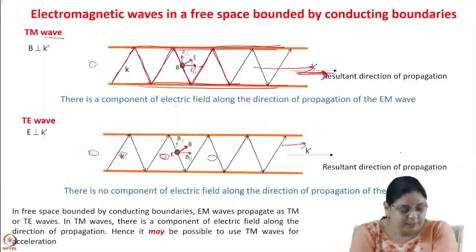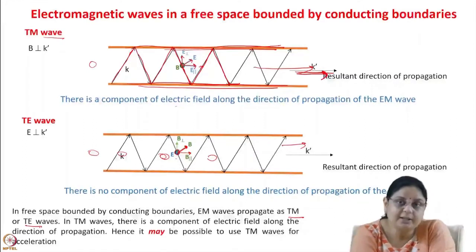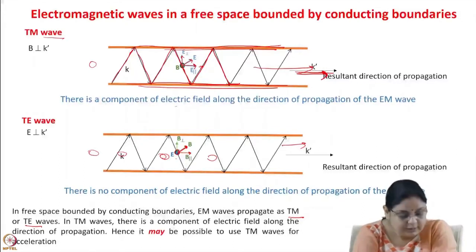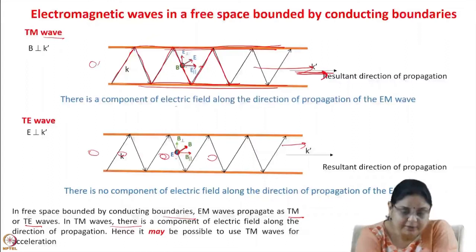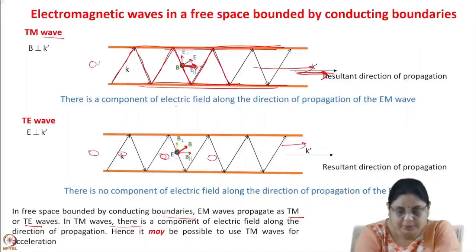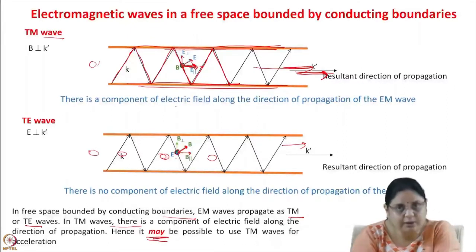In free space bounded by conducting boundaries, electromagnetic waves propagate as TM or TE waves rather than TEM waves. For TM waves there is a component of electric field along the direction of propagation, so it may be possible to use TM waves for acceleration.